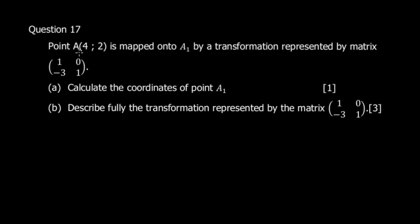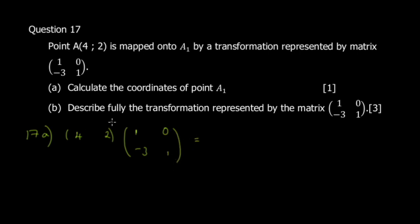Question 17 says point A at (4, 2) is mapped onto A' by a transformation represented by the matrix. For part 17a, we multiply the row vector (4, 2) by the transformation matrix [1, 0; -3, 1]. We do row by column multiplication.